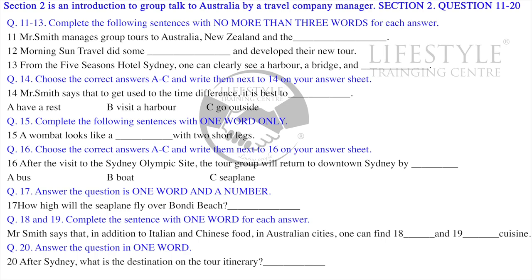Good morning everybody, and welcome to Morning Sun Travel. I'm Rick Smith, and I manage our group tours to Australia, New Zealand, and the South Sea islands. I'm going to introduce our latest product, the 21-day Grand Australian Tour. Why did we develop this new tour? Our two-week Aussie tours have proved really popular over the past few years, so after doing some market research, we found that there's a demand for a longer tour.